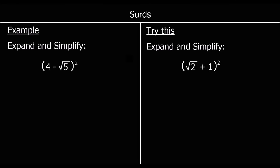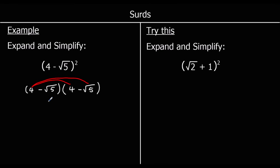Another example. This time I've got 4 minus root 5 squared. When something's squared, that means it's multiplied by itself. So this means 4 minus root 5 multiplied by 4 minus root 5. We follow the same steps — we're going to do 4 multiplied by both the terms in the second bracket, and then negative root 5 multiplied by both terms in the second bracket. So we start with 4 times 4, which is 16.